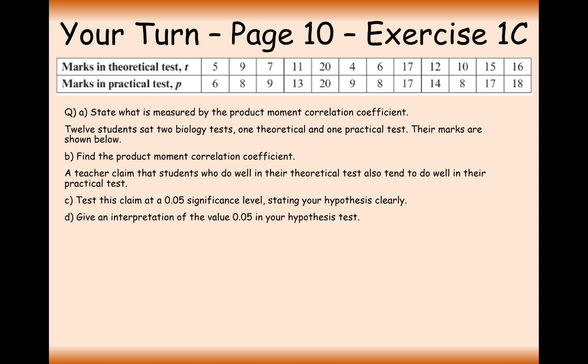Let's get started on this question. The first part asks: what is measured by the product moment correlation coefficient? The PMCC measures the strength of correlation between two variables on a straight line of best fit. It also tells you the type of correlation — whether it's positive or negative. That is your answer to part A.